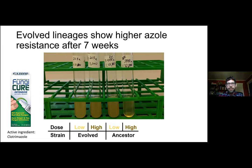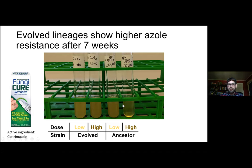After seven weeks, you start to see some divergence between lineages. On the left are two tubes of an evolved strain and on the right, the ancestor in two different doses of clotrimazole. You can see that in the higher dose, the ancestor is quite peakish — you can basically see through the media — whereas the evolved strains are much more opaque. So this evolved strain is clearly doing much better in a high dose of the antifungal than the ancestor.